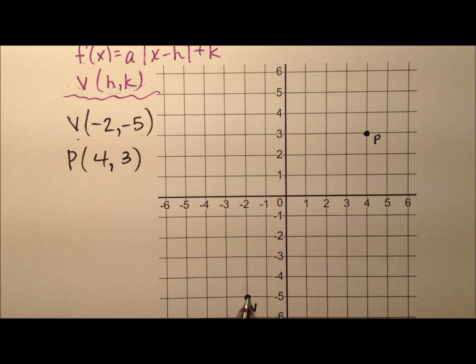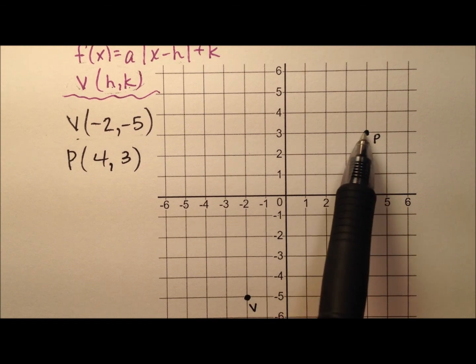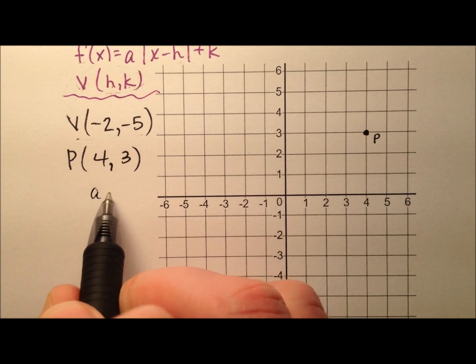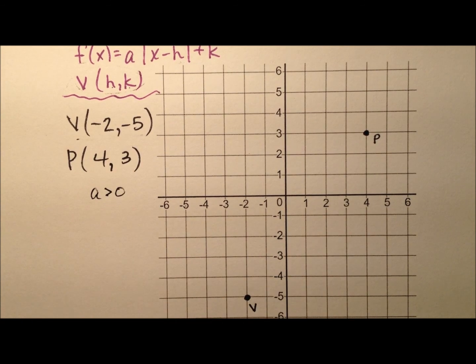So if this is the vertex and we know the leg passes through P, we know that it's opening upward, so we know a has to be greater than 0, so positive.